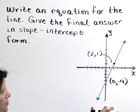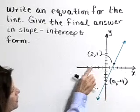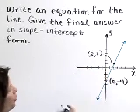Here we have a line pictured and it goes through the points 0, negative 4, as well as the point x equals 2, y equals 1.